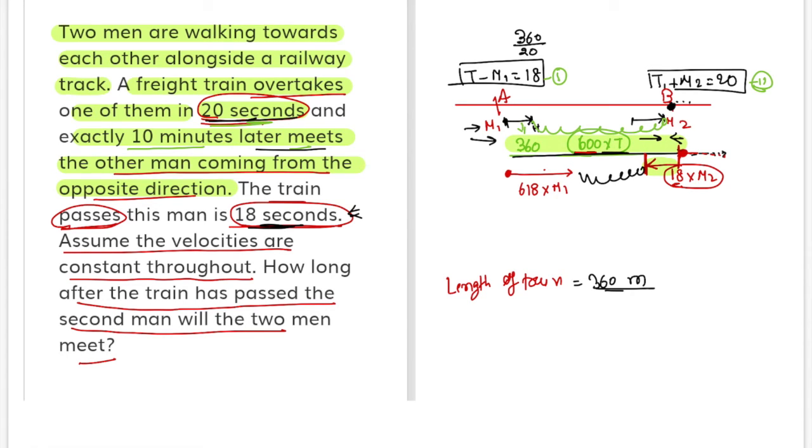We have to consider this distance for M1 and M2. This distance is 600 into T plus 360, total distance minus this distance: 618 into M1, and this distance minus 18M2. This is my expected distance.